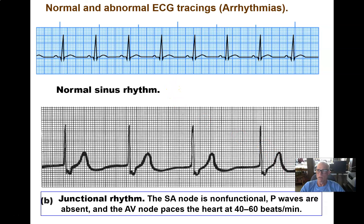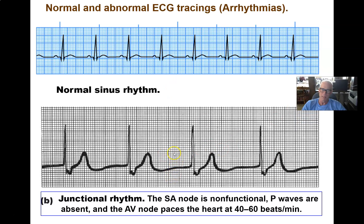There could be a situation in which the SA node is no longer pacing the heart. If the SA node stops functioning, the AV node will take over pacing the heart — this is called a junctional rhythm, because the junction between the atria and ventricles is the AV node. We don't see any P wave. Once the AV node has an action potential, it shoots down into the ventricles along the intrinsic conduction system and we have a QRS complex, a plateau period, and a T wave for repolarization. The AV node can pace the heart but only at 40 to 60 beats per minute, which won't be enough blood flow for the body.